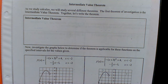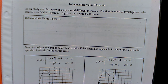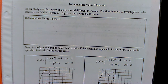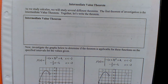This first one, the Intermediate Value Theorem, is commonly referred to as an existence theorem. This theorem only tells you the existence of a number — that there is some number out there that will work. It doesn't tell you what that number is or how to find it; it just tells you that it exists.